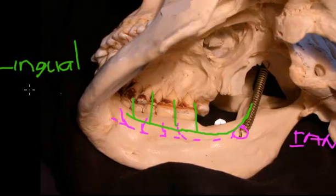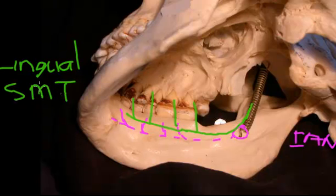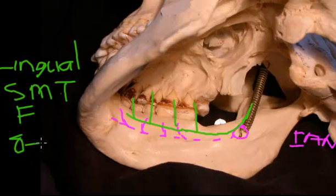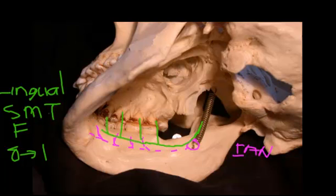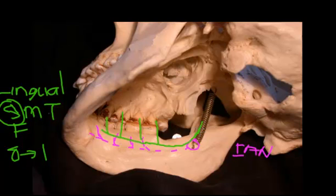The lingual nerve supplies the gingiva, the mucosa, the tongue — anterior two thirds — and the floor of the mouth, from all the way from the eight right through to the one. If we were going to be extracting teeth, we would have to block that nerve as well, because for example we would be tearing the gingiva. So the lingual nerve is a critical branch for the floor of the mouth.